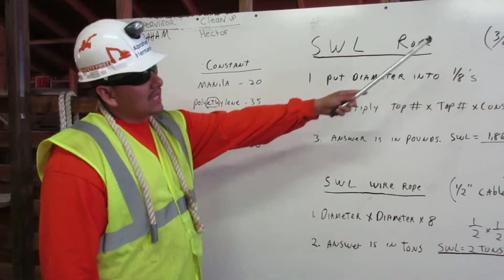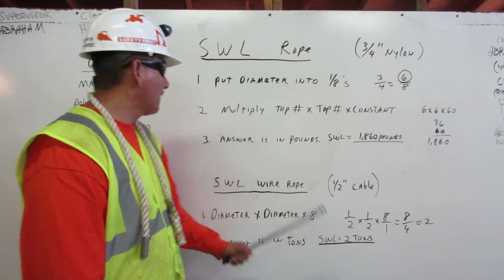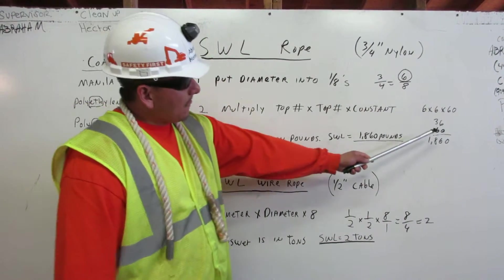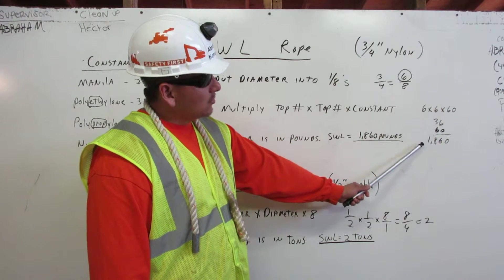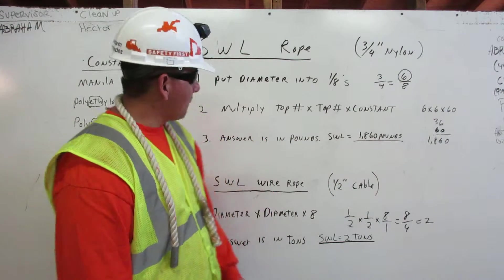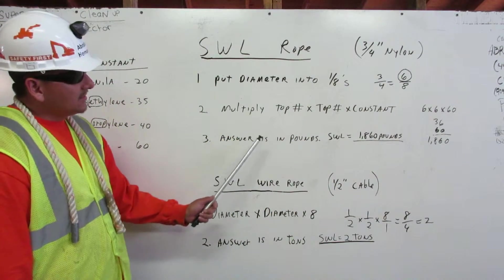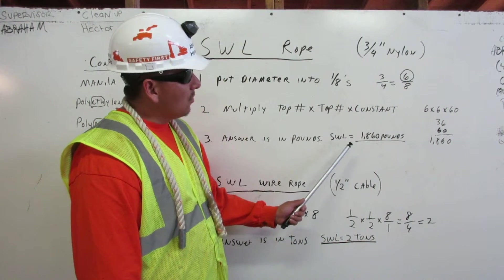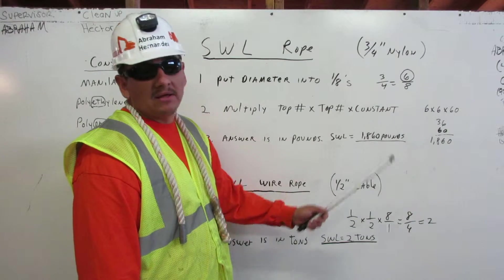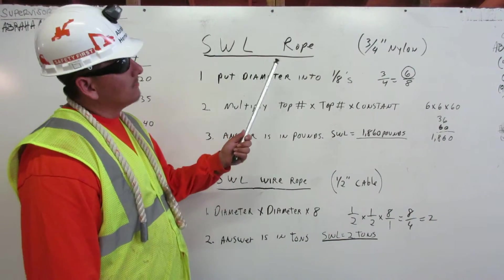When we're using nylon, that's why we have a sixty. So six times six times sixty equals one thousand eight hundred and sixty. The answer is in pounds, so that means our safe working load equals one thousand eight hundred and sixty pounds for our nylon rope.